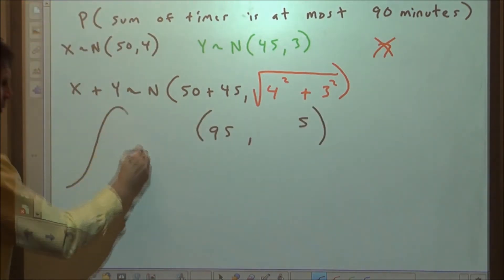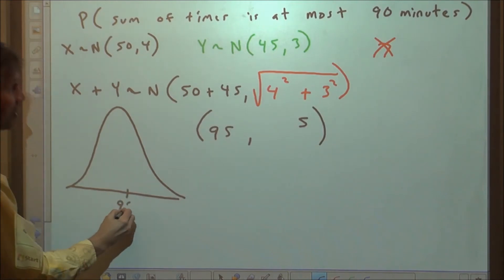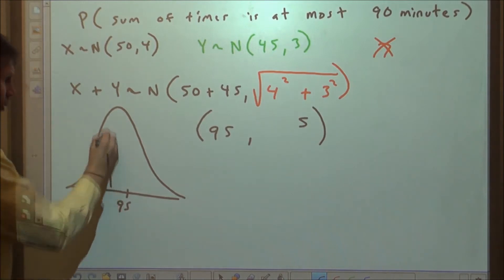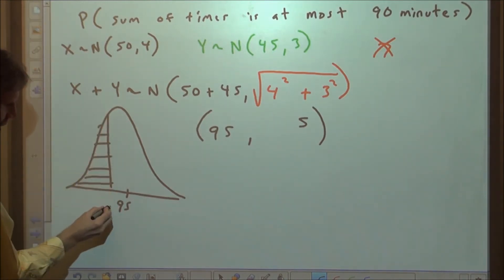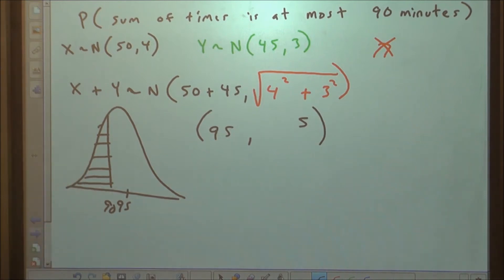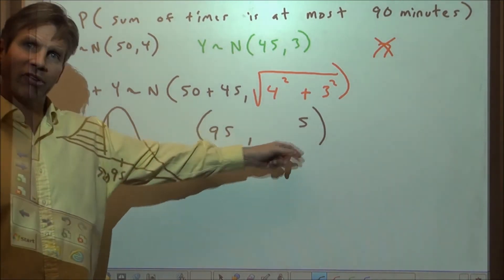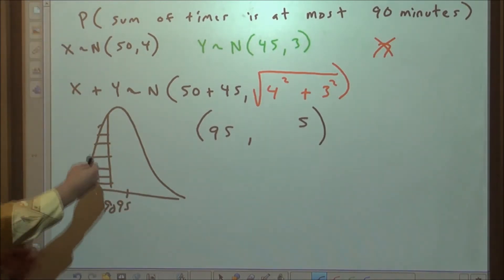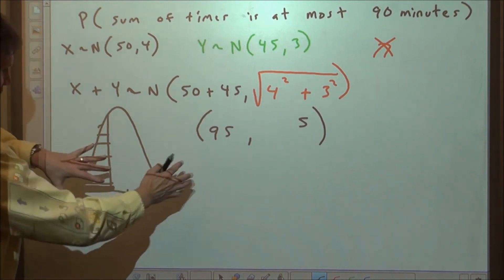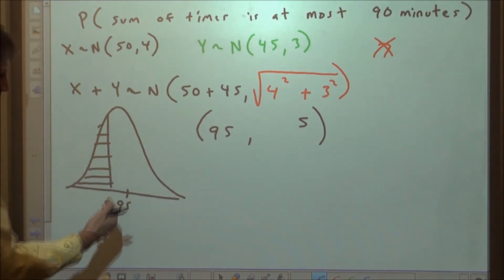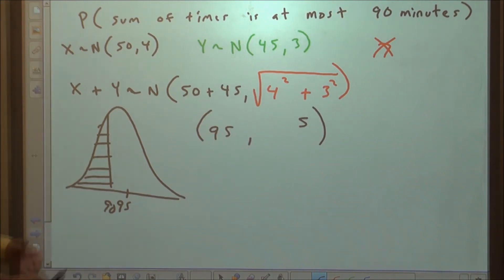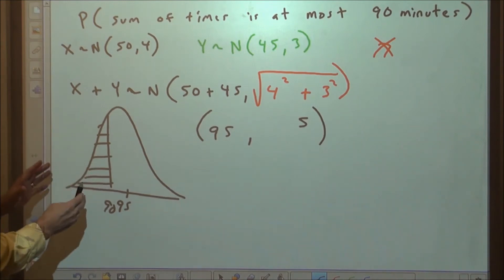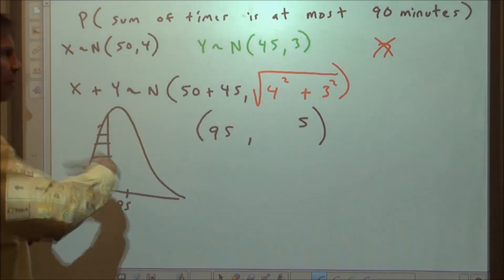Our joint distribution has a mean of 95 and a standard deviation of 5. We're trying to find the probability of getting at most 90 minutes. Notice that 90 is exactly one standard deviation below the mean. Using the empirical rule or normal CDF, the area under the curve to the left of 90 is about 15.87%. So the key result from this video is how to set up joint distributions correctly.